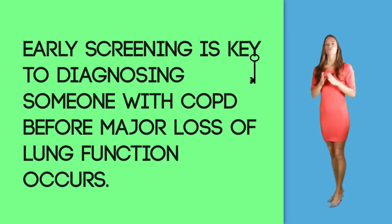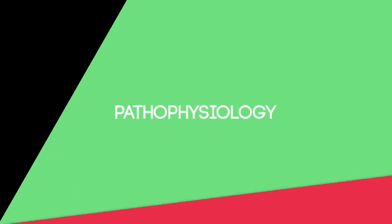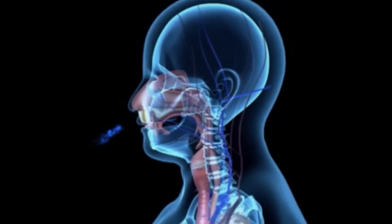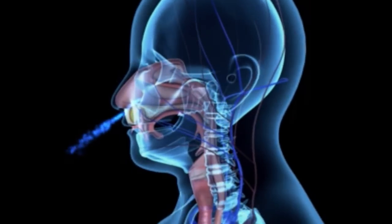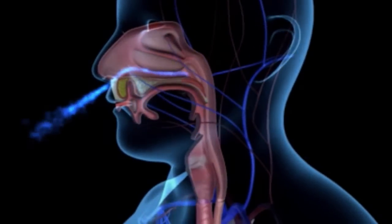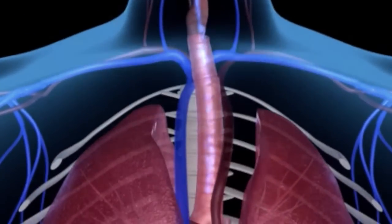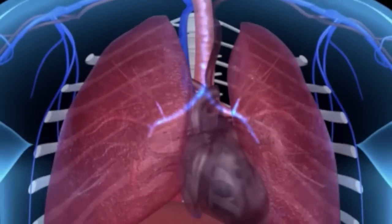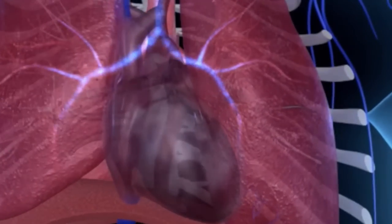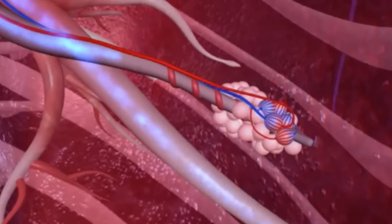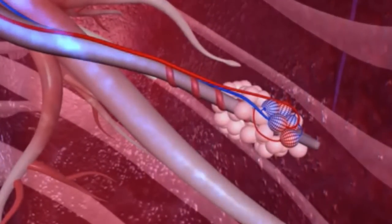To understand the progression of COPD, we need to understand the structure and functioning of the respiratory system. During the breathing process, air enters the main windpipe. This windpipe divides into two smaller branches called bronchial tubes. Each bronchial tube goes to one of the two lungs, where they are divided into numerous smaller branches known as bronchioles. Bronchioles are fine branches with tiny air sacs at the end.